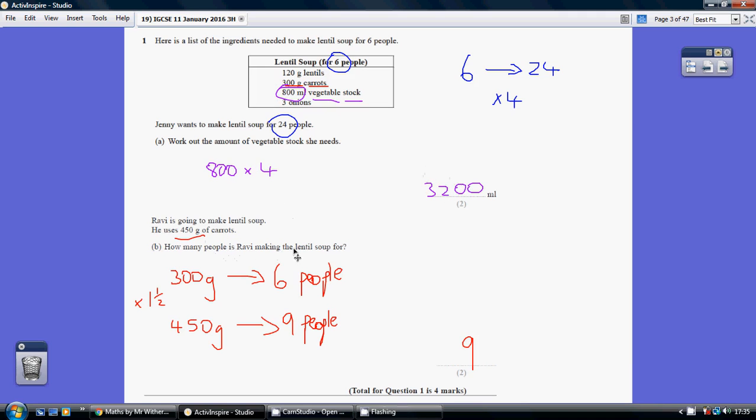Now how many people is Ravi making the lentil soup for? We know 300 grams of carrots is for 6 people.